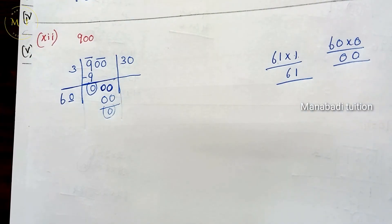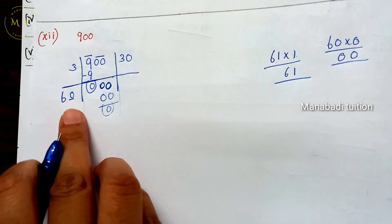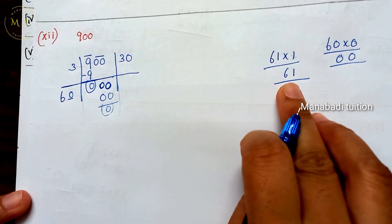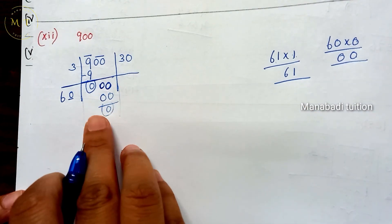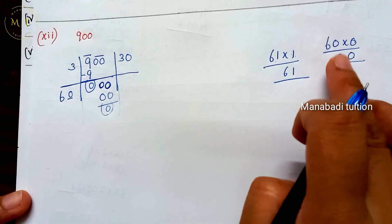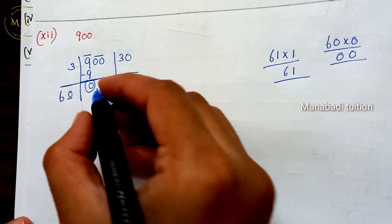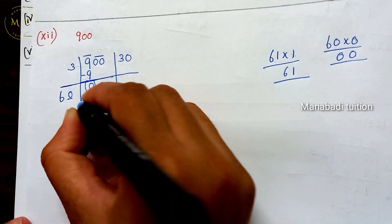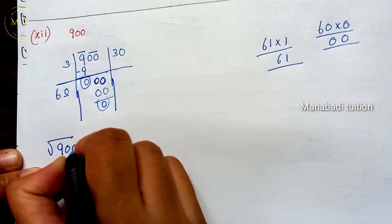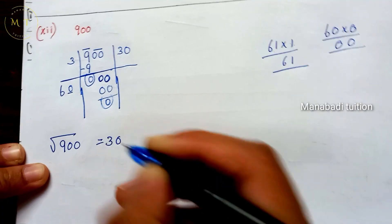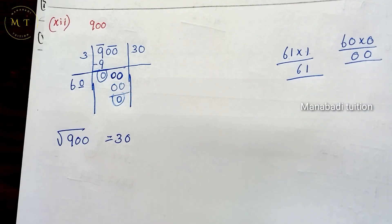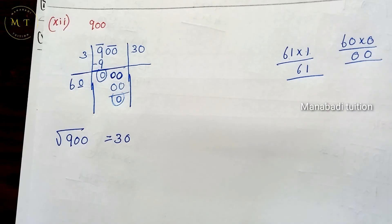So let me show you clearly. Once I show you 0, I show you 0. So here I show you the value. Root of 900 value is 30. So if you doubt, it will be 900. So that's it.